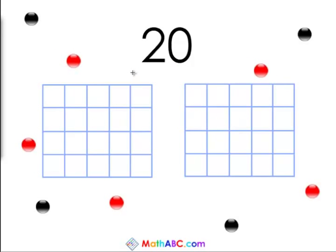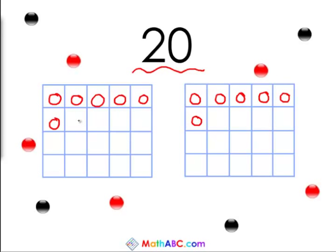Alright, now we have the number 20. Nice big number. So, let's split up this number. So, 1, 2, 3, 4, 5, 6, 7, 8, 9, 10, 11, 12, 13, 14, 15, 16, 17, 18, 19, 20.